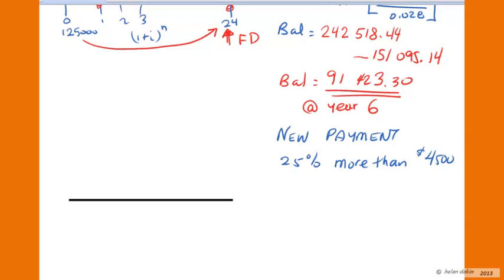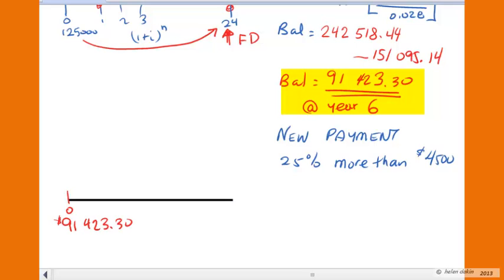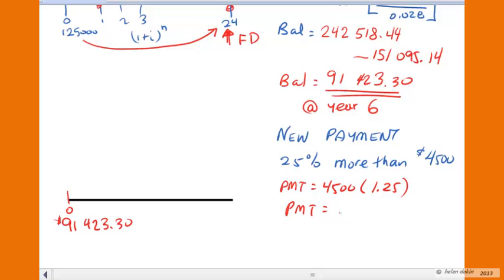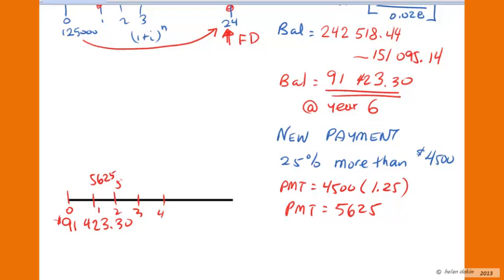Where do we go from here? We start off with a new balance of $91,423.30, giving us another time diagram with that opening balance. We also know our new payment size is 25% more than the old payment size of $4,500. 25% more than $4,500 means the new payment equals $4,500 multiplied by 1.25, so the new payment becomes $5,625. On our time diagram, these new payments of $5,625 will be applied on our new loan of $91,423.30.